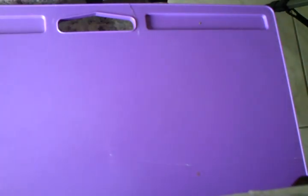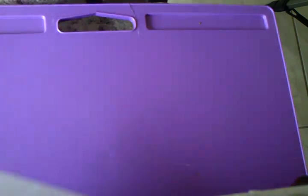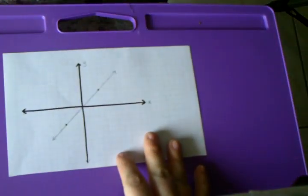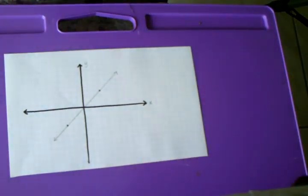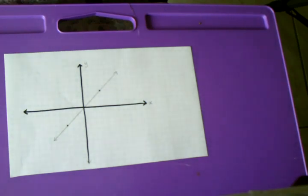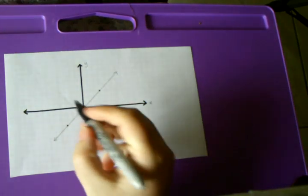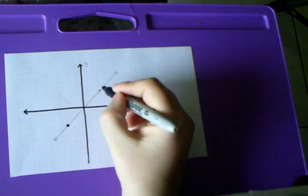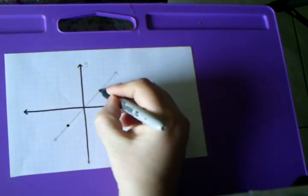We're going to look at how to find the slope of a line by looking at a graph. This is one of our typical graphs, and as you can see, we have two points located on it — one right here, and one right here.